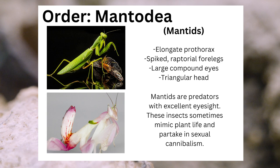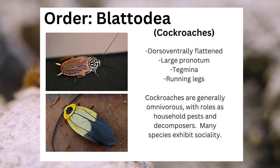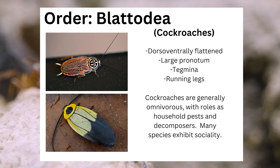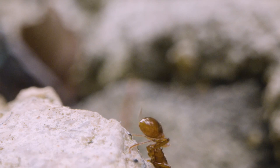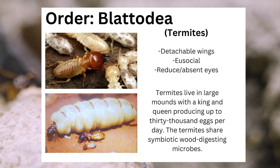The order Blattodea is a wide-spanning order containing two main groups. Cockroaches can be identified from their dorsal-ventrally flattened bodies, their large pronotum, their tegmina, and their legs modified for running. Cockroaches are generally omnivorous, with roles as household pests and decomposers, and many species exhibit sociality. The other main group of Blattodea are the termites, identified from their detachable wings, their eusociality, and their reduced or absent eyes. Termites live in large mounds, with a king and a queen producing up to 30,000 eggs per day, and they share symbiotic wood-digesting microbes among themselves.